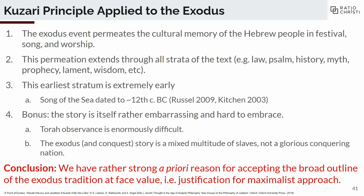Goldschmidt goes so far as to say this proves the entire tradition — that's ridiculous, I think; no argument could get you that far. But what it does do is give you very strong a priori reason for accepting the broad outline of the Exodus tradition at face value. In other words, we have good reason to think just on testimony alone that the Israelites were in Egypt, and they exited Egypt through the Yom Suf at some probable intervention from God. This is the maximalist assumption: we have good reason to take the text as a foundation. We've actually justified our first pillar in our argument of responsible maximalism — the text is communicating history in a reliable way.